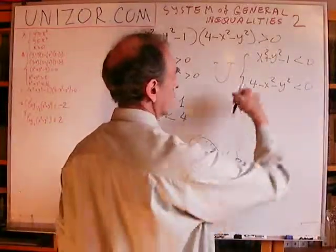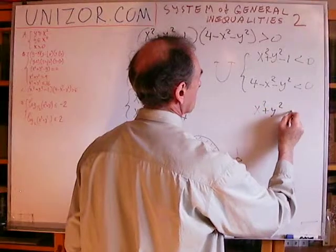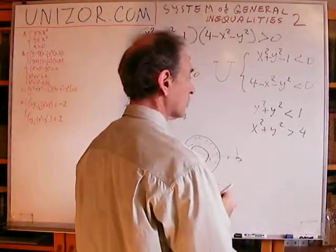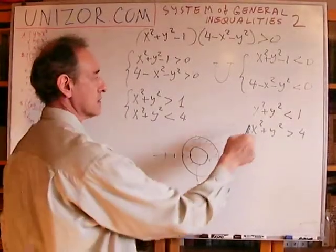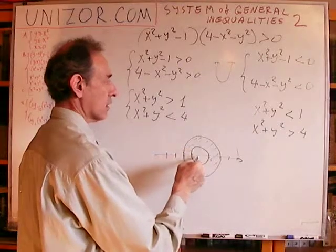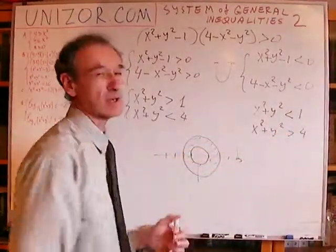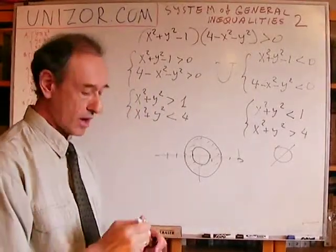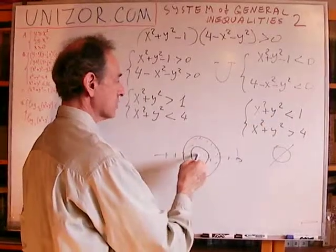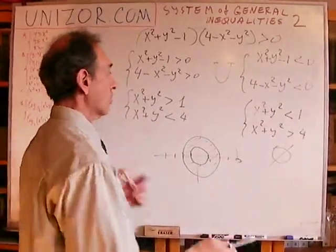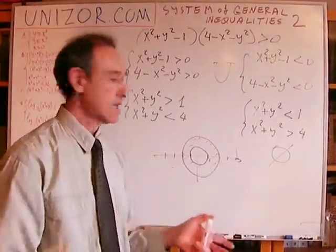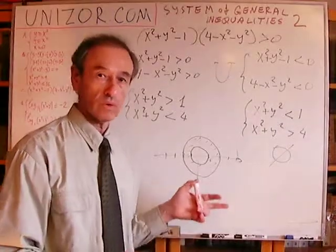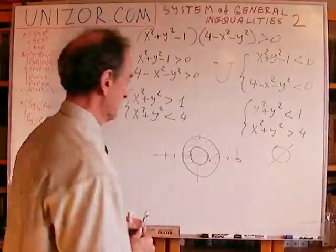Now let's talk about the second case — both factors negative. That means X² + Y² less than 1 and X² + Y² greater than 4. These refer to the same two circles, but the first means inside the smaller circle and the second means outside the bigger circle. The intersection of these is the empty set — there are no points simultaneously inside the small circle and outside the bigger circle. So we are unionizing the ring with an empty set, and the result is exactly the ring we started with.